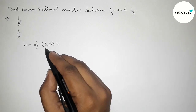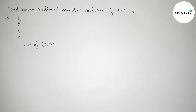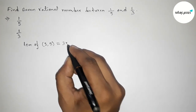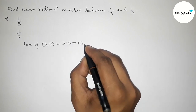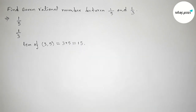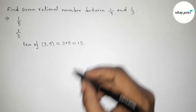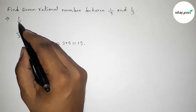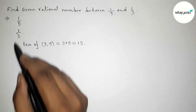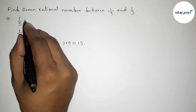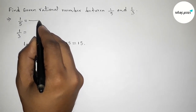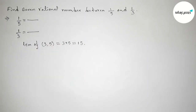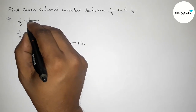Finding the LCM: the numbers 3 and 5 are prime to each other, so the LCM will be the product of the numbers 3 and 5. So 3 into 5 equals 15. The LCM is 15. Next, we have to make the denominator 15 for both fractions.